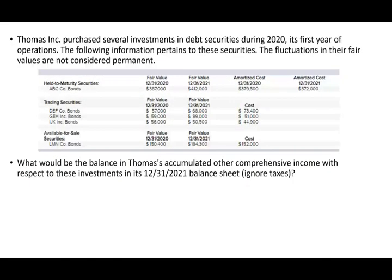Let's take a look at the next question. We're given basically the same information with different numbers. The question is: what would be the balance in Thomas's accumulated other comprehensive income with respect to the investment in 2021? So here, first of all, we are dealing with 2021. Second, we are being asked what is the accumulated other comprehensive income balance.